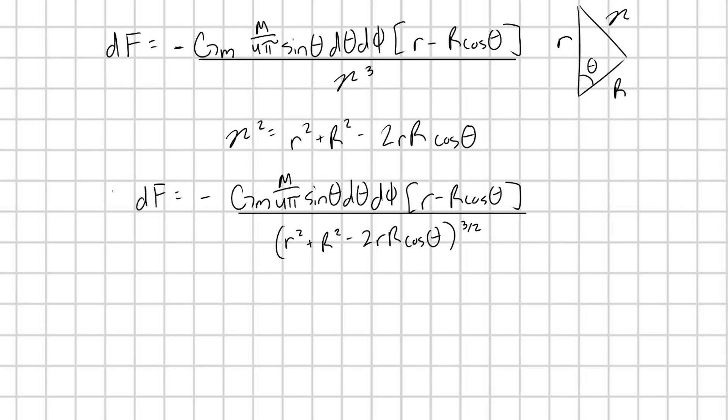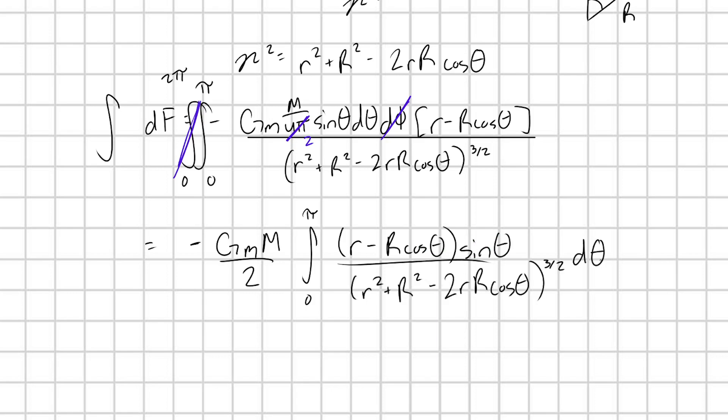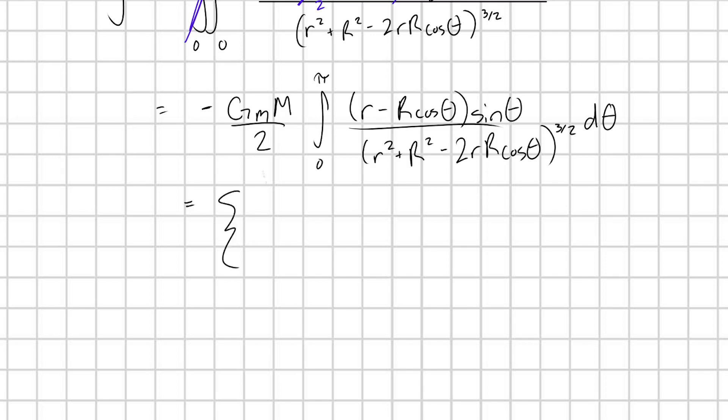And now we just have to integrate df across our entire shell. So in the theta direction, we have to range our integral from 0 to pi, and for phi from 0 to 2 pi. Because there's no explicit dependence on phi in this integral, that's just going to give me an extra factor of 2 pi, which cancels nicely, meaning that we're left with this kind of gross looking integral for theta. You can either do this by hand, it will require substitution and integration by parts, or you can use an integration calculator.